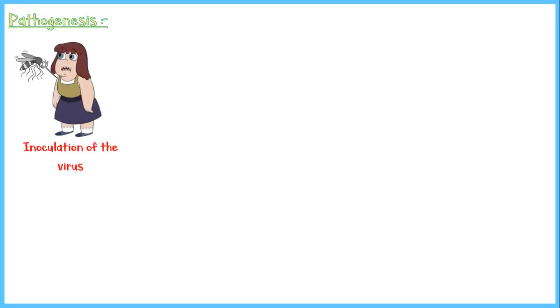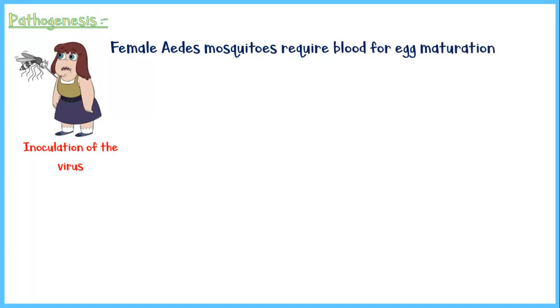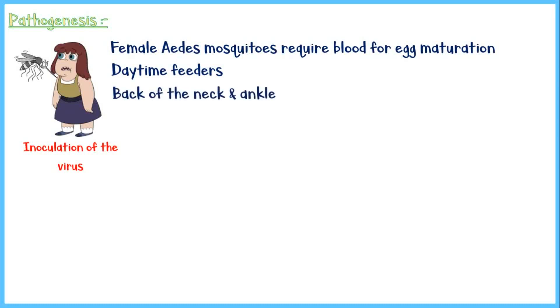Pathogenesis begins when an infected female Aedes mosquito bites a person for a blood meal, inoculating the virus into the blood. Female Aedes mosquitoes require blood for egg maturation. Unlike other mosquitoes, they are daytime feeders and usually bite on the back of the neck and ankle area.